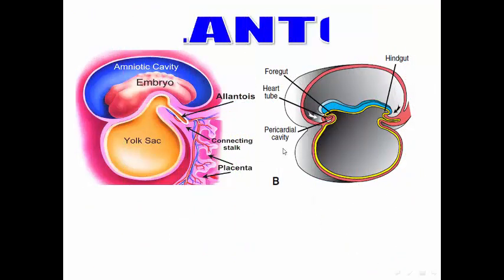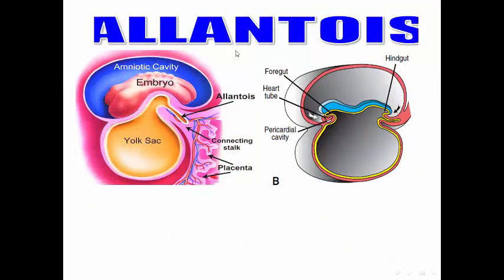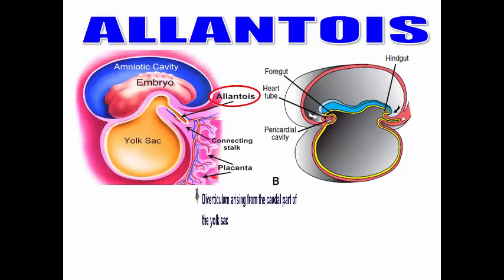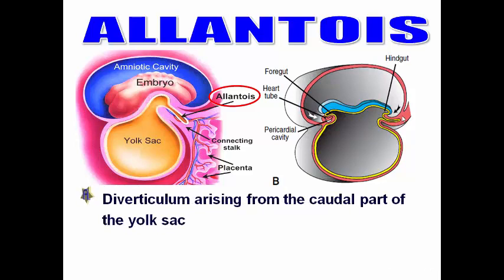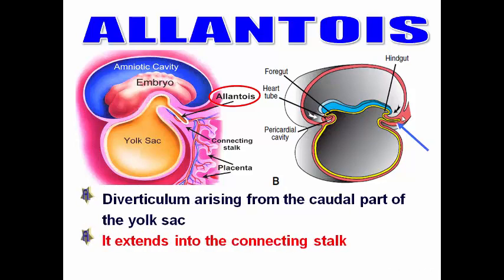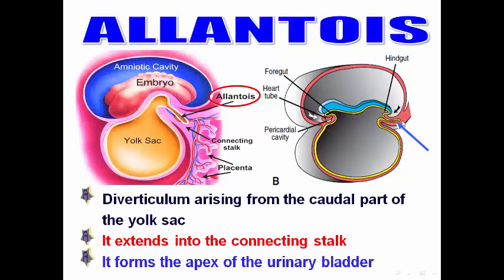The allantois is a diverticulum arising from the caudal part of the yolk sac. It extends into the connecting stalk — the future umbilical cord — and it forms the apex of the urinary bladder.